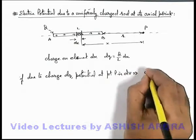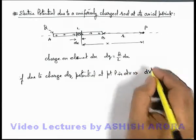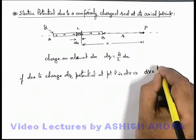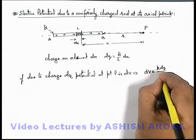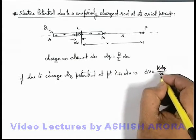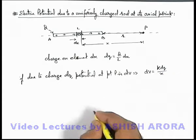This implies we can write the value of dv due to a point charge as k dq by x, that is k multiplied by charge divided by the distance of the point from the charge.